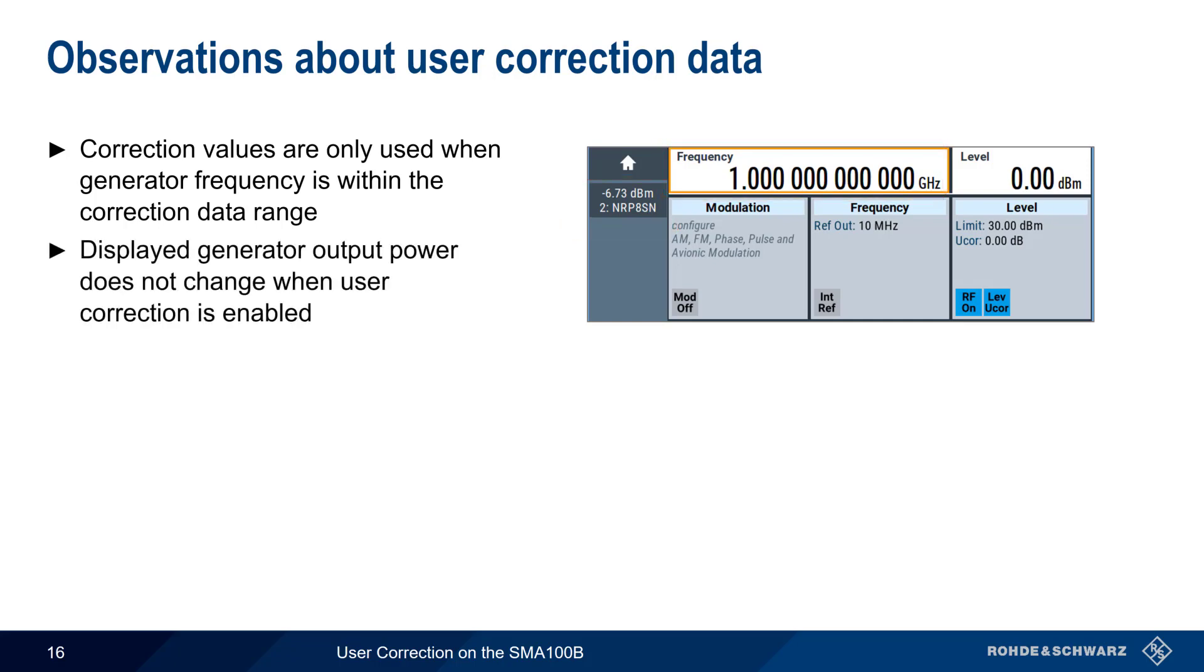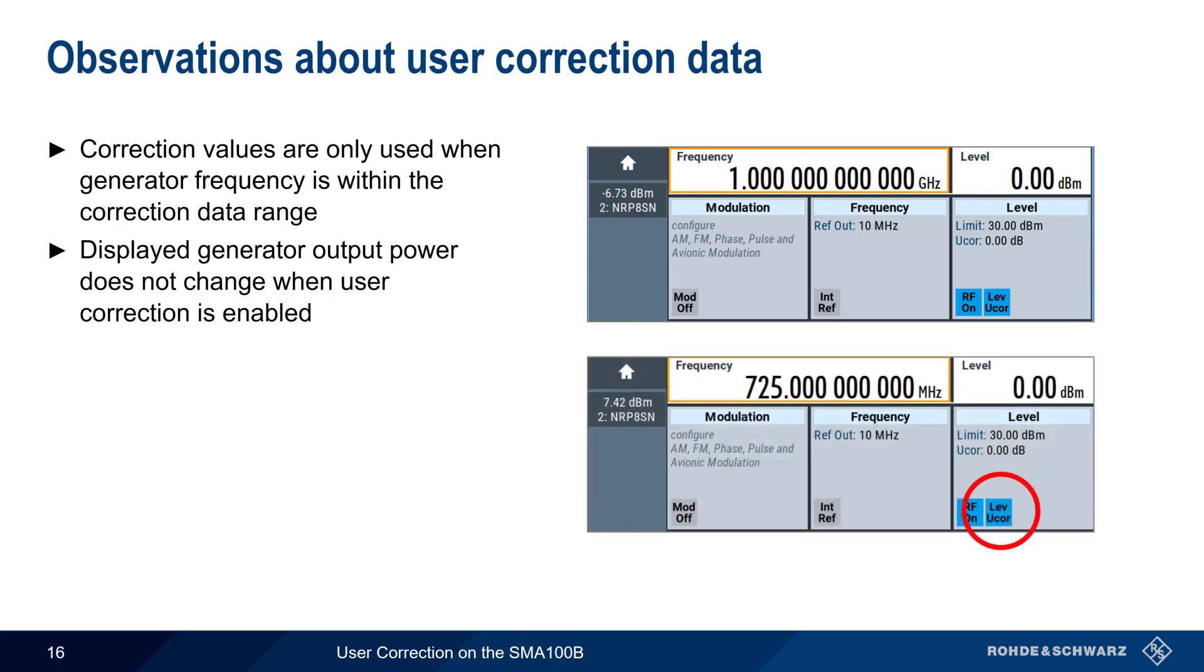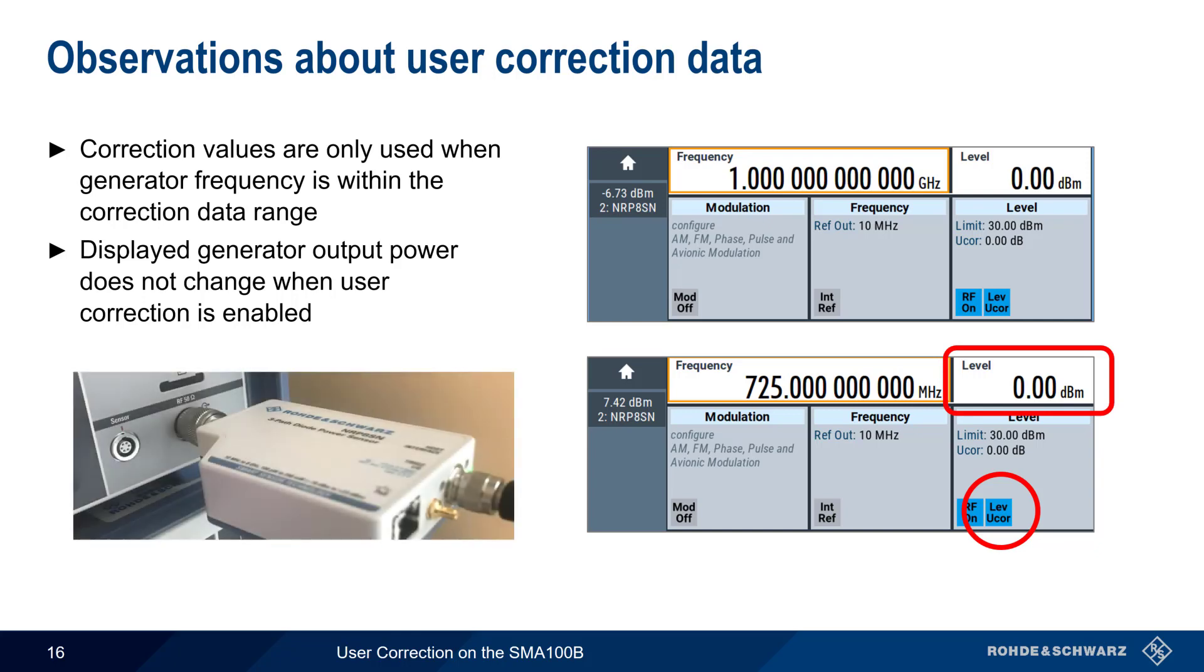Secondly, note that the generator's displayed output power does not change even when user correction is enabled and active. Here, we are within the frequency range covered by the correction values and user correction is enabled. The SMA shows our generator output power as 0 dBm, but a directly connected power sensor shows that the actual SMA100B power output is plus 7.42 dBm.